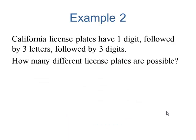California license plates have one digit. A digit, by the way, is a number from zero through nine. There are ten digits in total, followed by three letters. The letters go from A through Z, and there are 26 of those, followed by three digits. How many different license plates are possible?